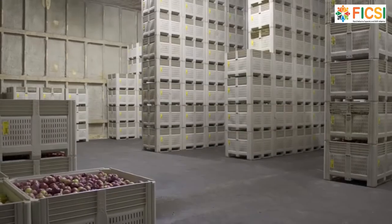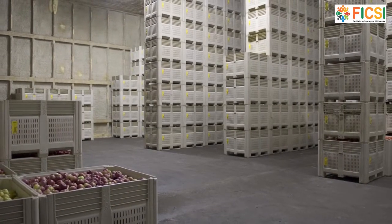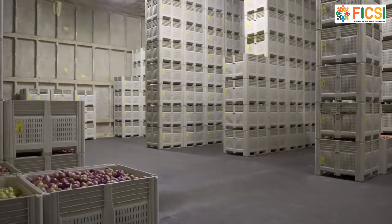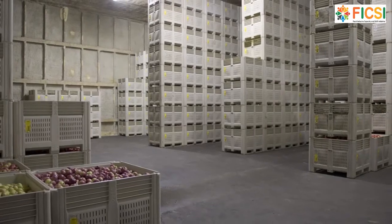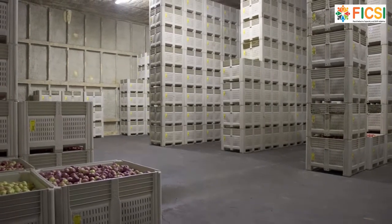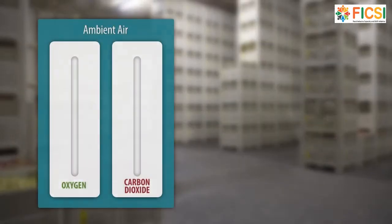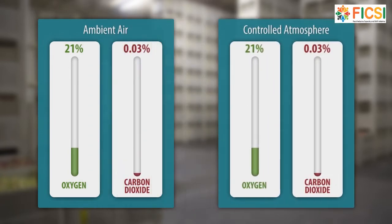Controlled atmosphere storage involves maintaining an atmospheric composition that is different from air composition. The air we breathe contains about 21 percent oxygen and 0.03 percent carbon dioxide. In a controlled atmosphere storage, oxygen content is kept below eight percent and carbon dioxide above that level.